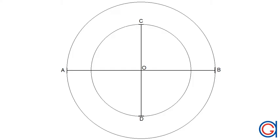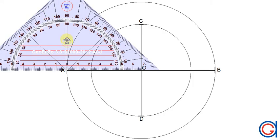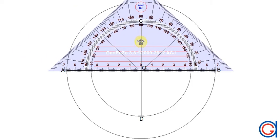So now we have two circles and the two axes AB and CD.